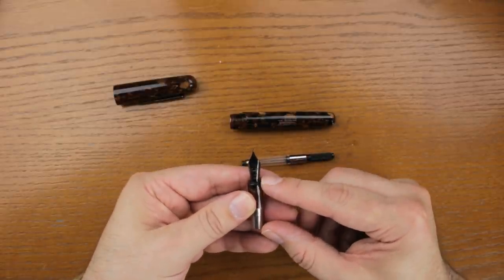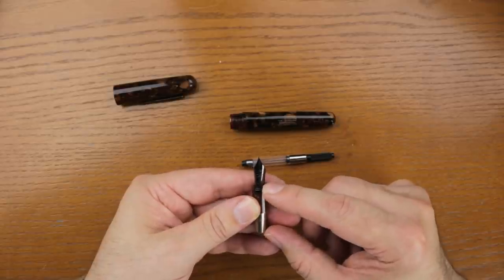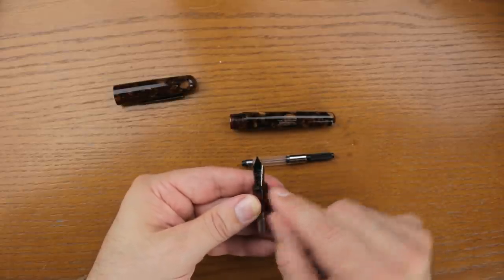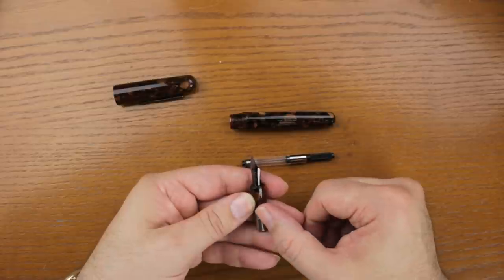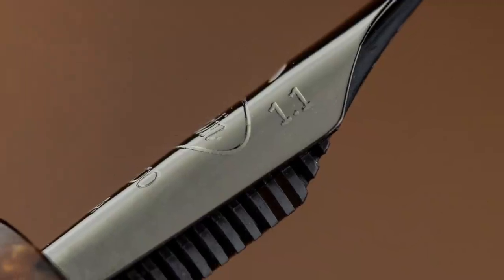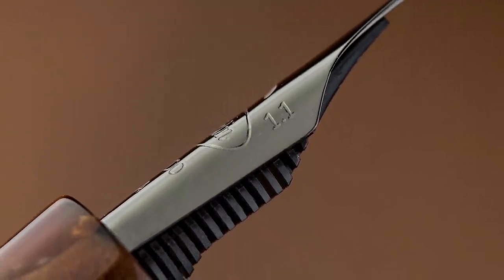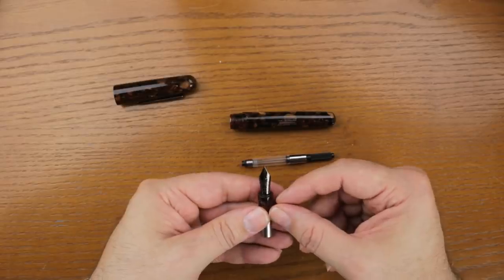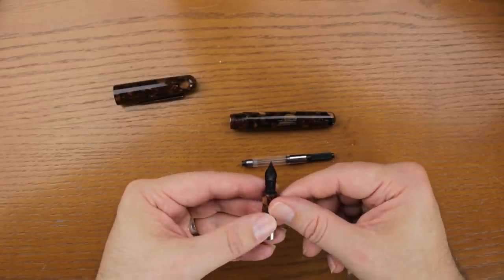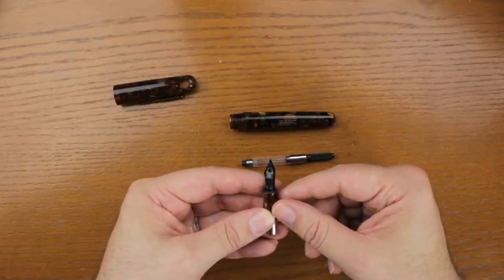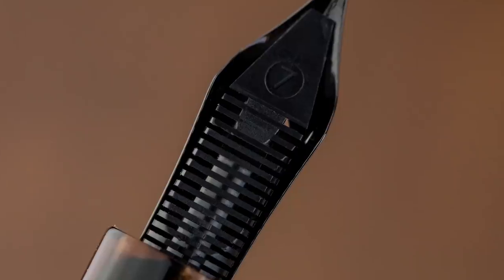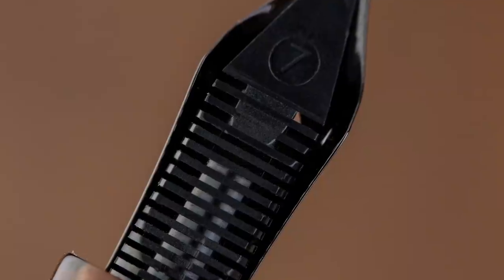And take a look at the nib here. It has your standard Conklin Toledo, and it has that crescent-shaped breather hole. Nib marking on the right side of the nib. This one is a fine, but they come in fine, medium, or stub. There are no broads in Conklins. Your feed shot, your standard Monteverde Conklin feed, comb feed, they work well.